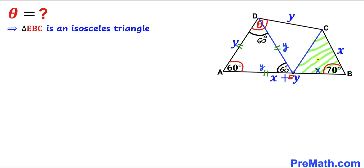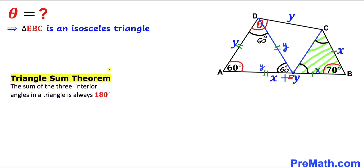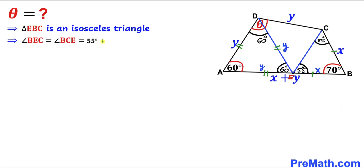Next, let's focus on triangle EBC. This is an isosceles triangle since EB equals BC equals x units. Therefore angles BEC and BCE are congruent. By the triangle sum theorem, since angle EBC is 70°, these two base angles must each be 55 degrees.